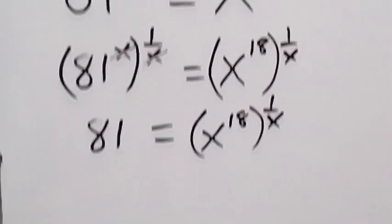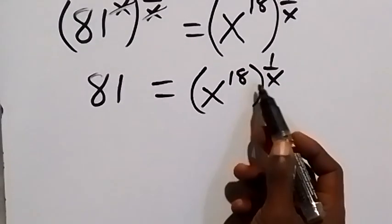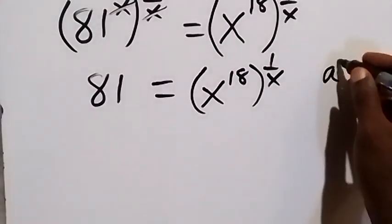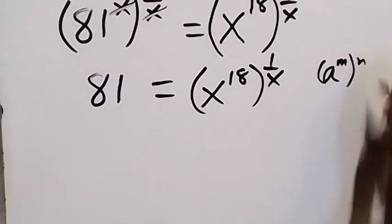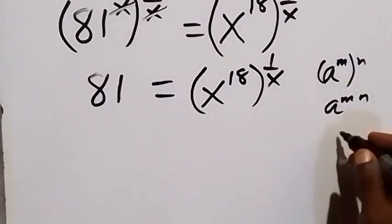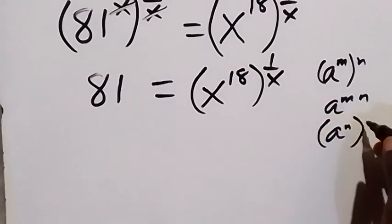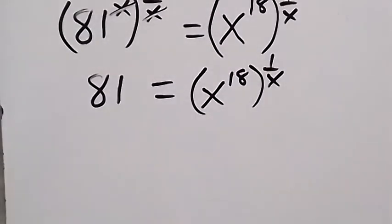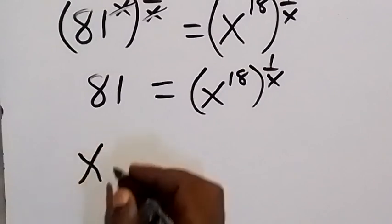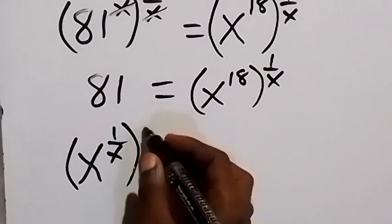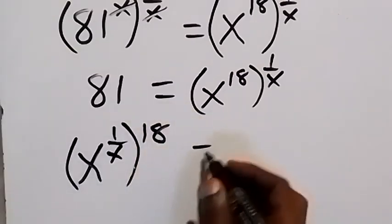From here, we can interchange this power from the law of indices. That is, when we have a raised to power m multiplied by n, this can be written as a raised to power mn, which is the same thing as a raised to power n, then raised to power m outside. So we can interchange the power. When we interchange that and write it, we have x raised to power 1 over x, then raised to power 18 outside, then equals to 81.